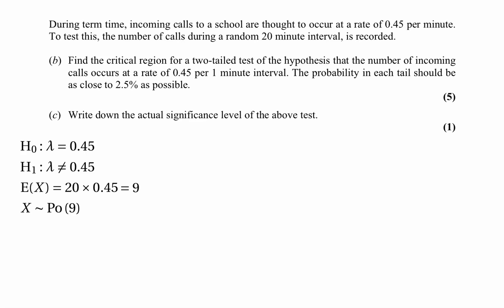Because it's a two-tailed test, the critical region will be in two parts. We can end up rejecting the null hypothesis if the test statistic is much smaller than 9 or much greater than 9 — in other words, if we get a very small or very large number of calls. To find exactly what the critical region is, we should look at the tables.